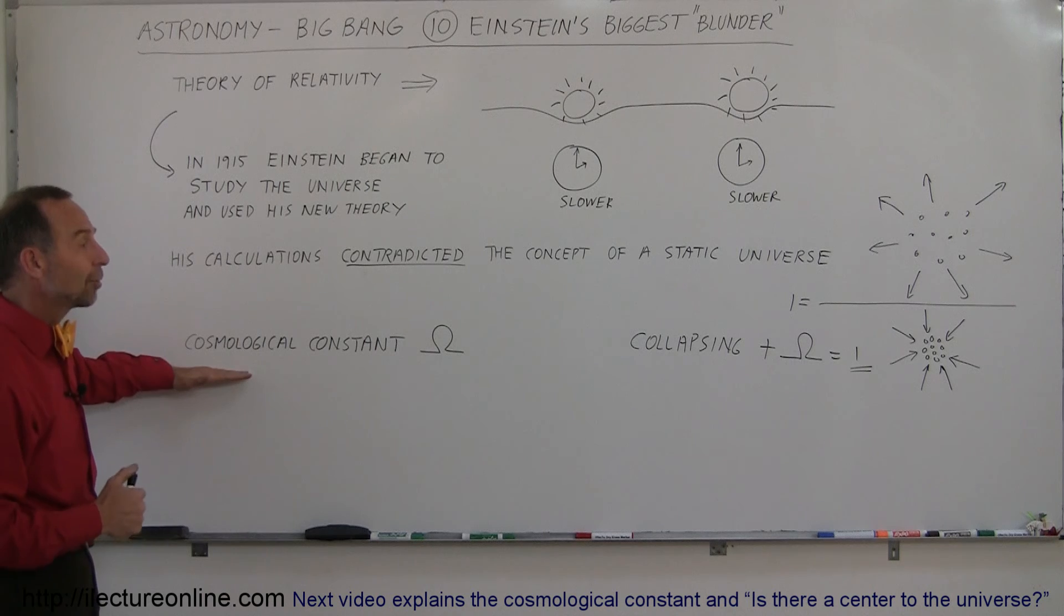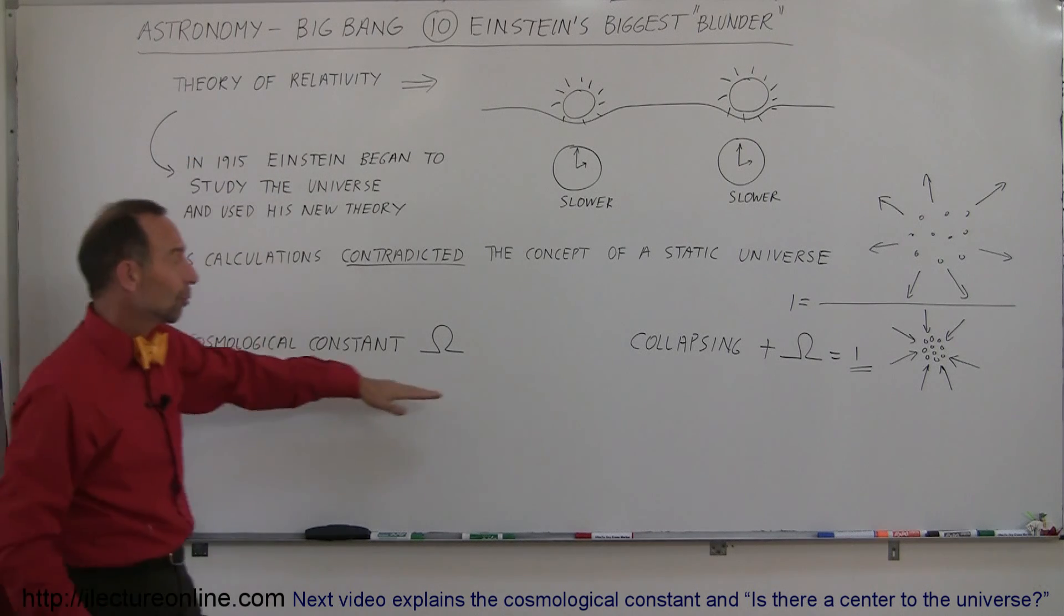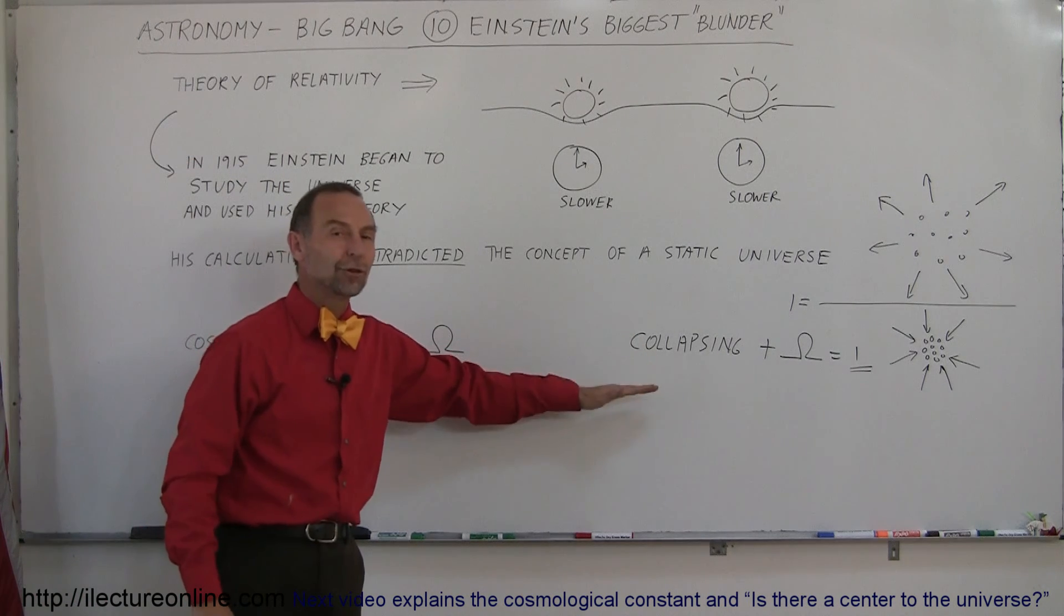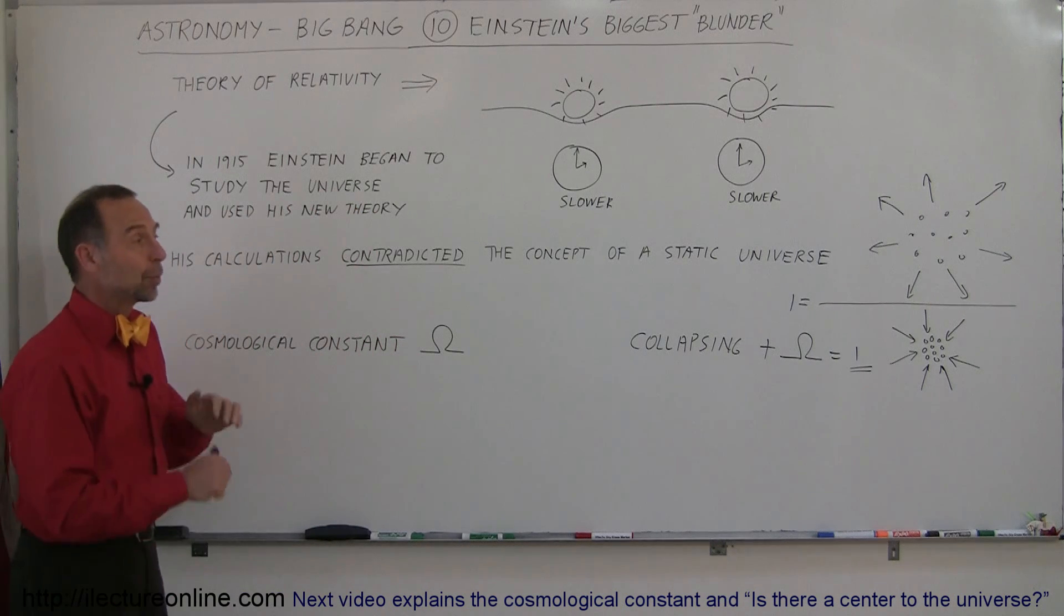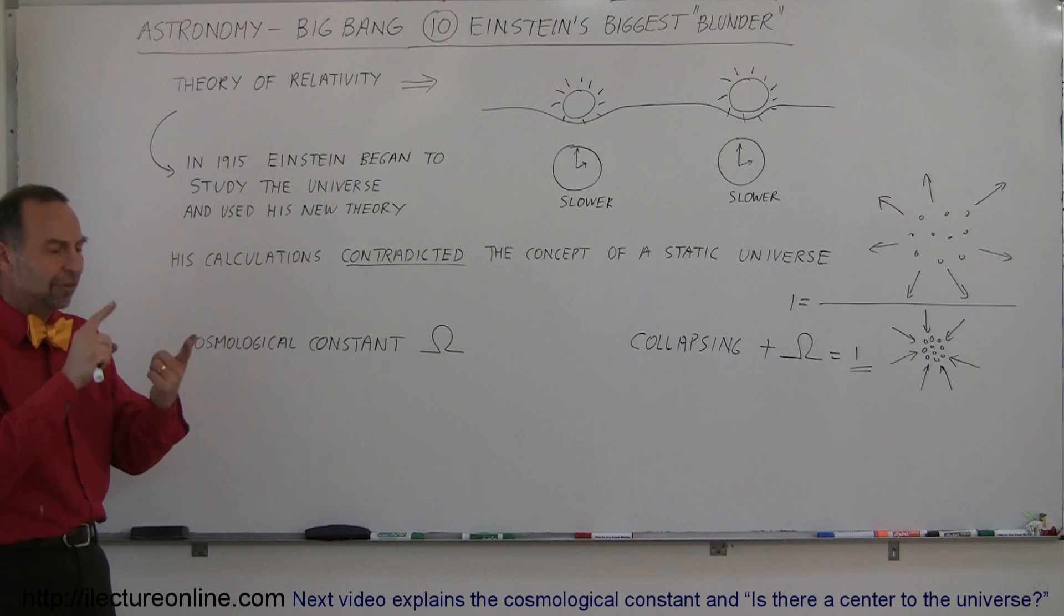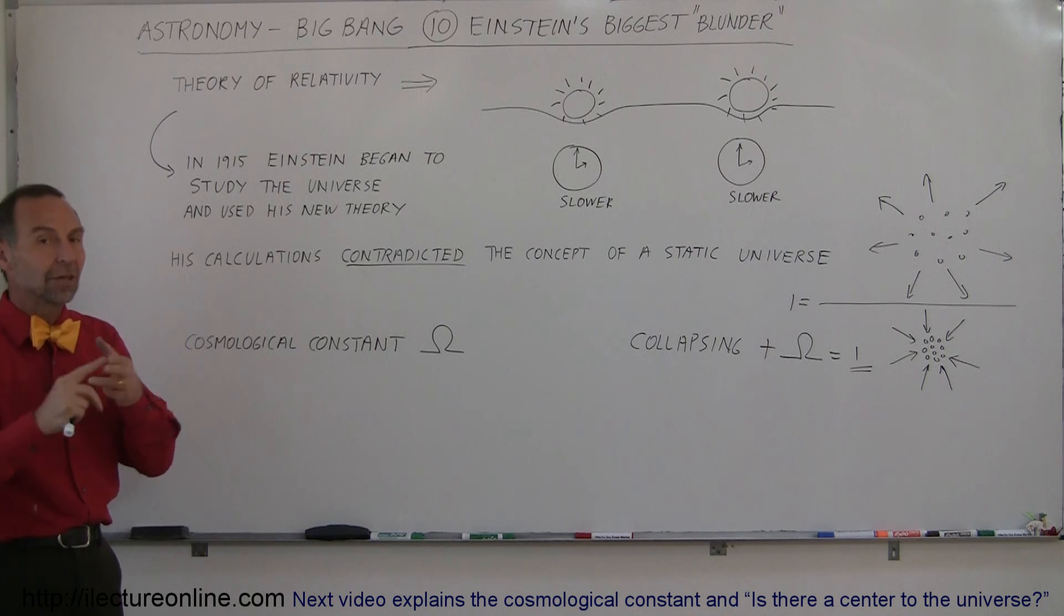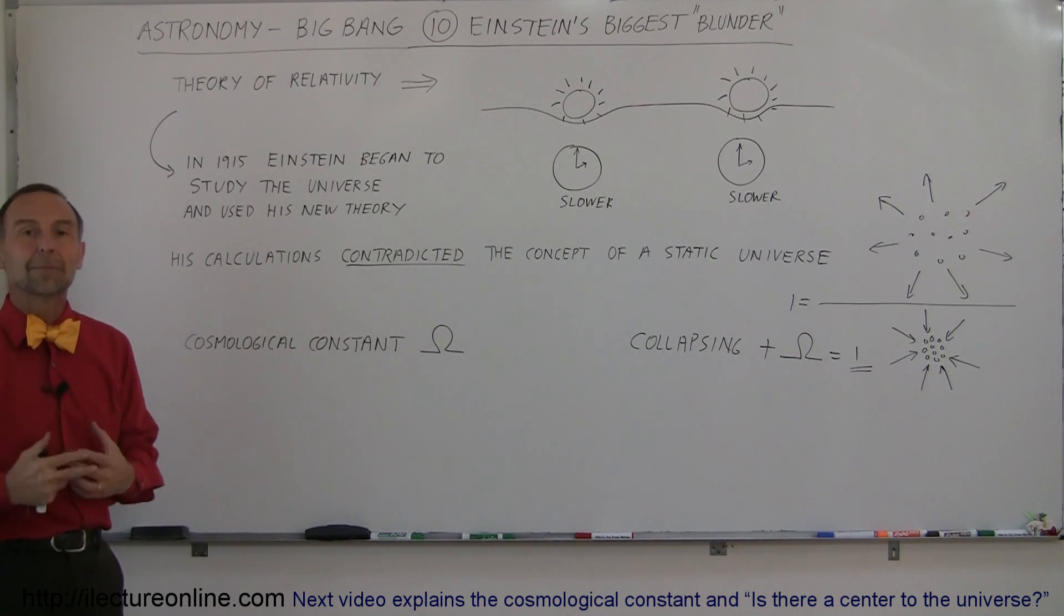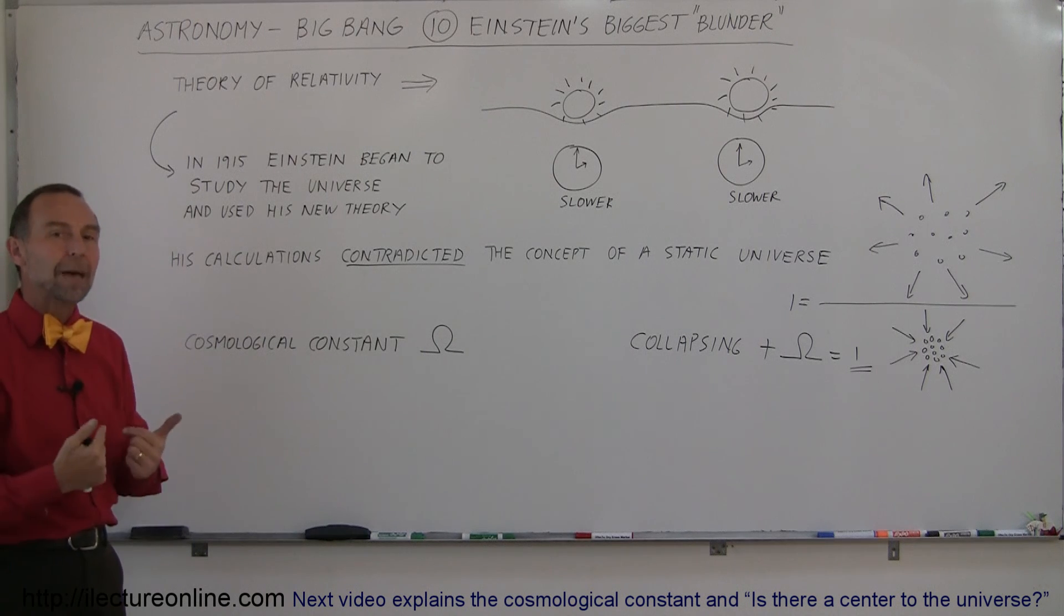But again, we began to realize, even in the early calculations with Einstein said, we have a universe that is not static. And with Olber's paradox, we know that the universe was not infinite. So if it's not static and it's not infinite, which means the universe must have had a beginning. And that's what set up the concept of the Big Bang.